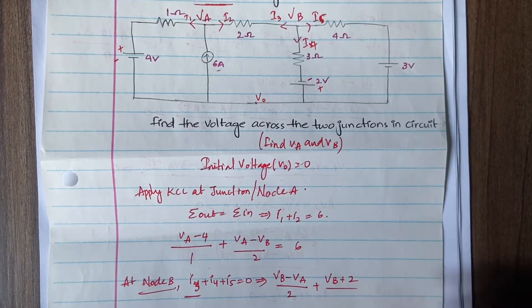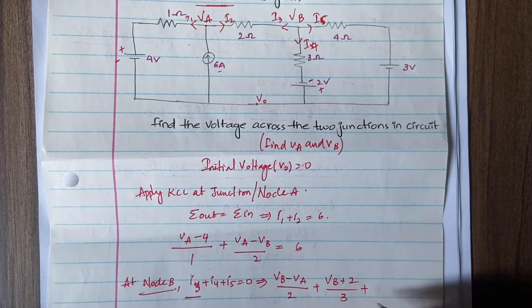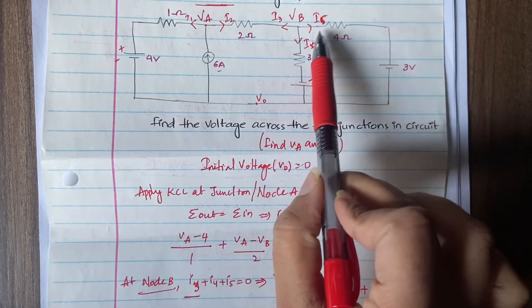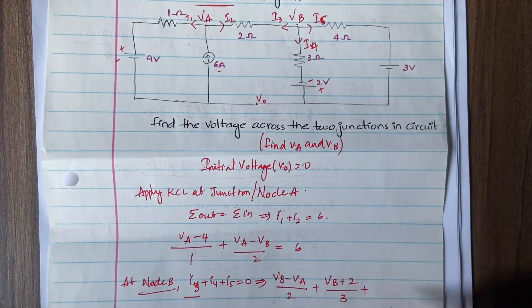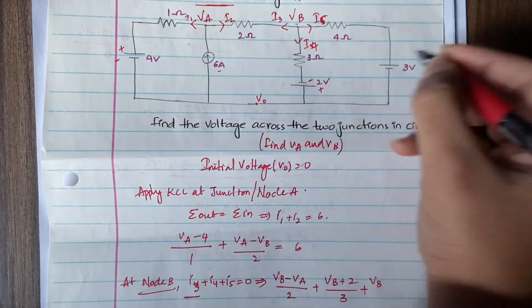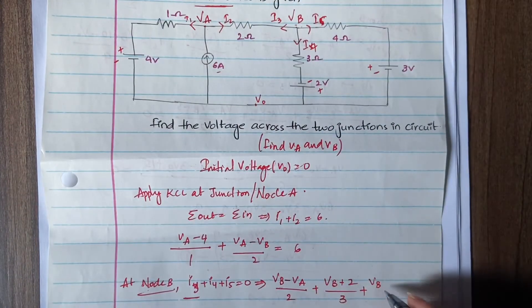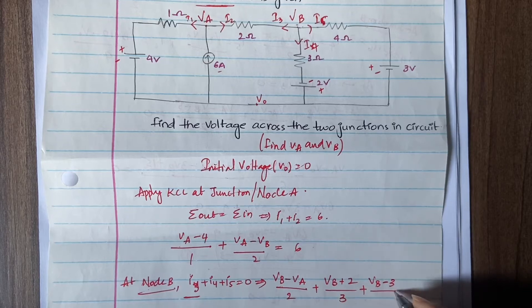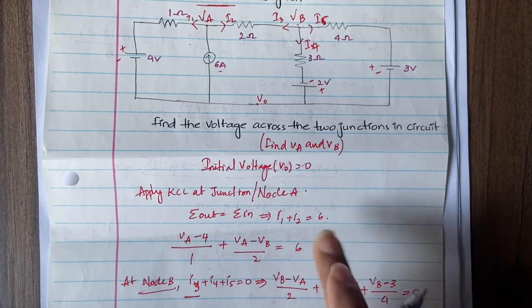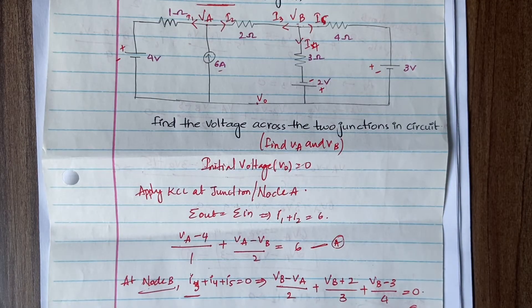For i5, the current again starts from Vb, which is at higher potential. With a −3V source and a 4-ohm resistor: i5 = (Vb − 3) / 4. Setting the full node B equation to zero: (Vb − Va)/2 + (Vb + 2)/3 + (Vb − 3)/4 = 0. This completes the equations for both junctions.